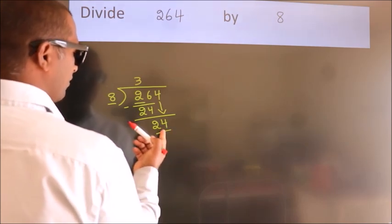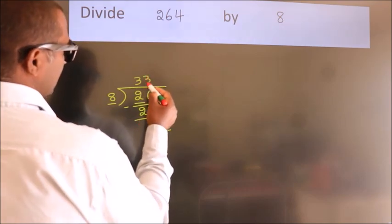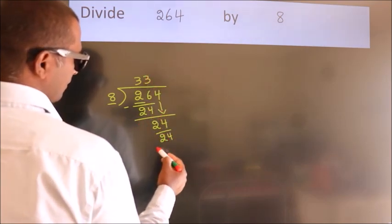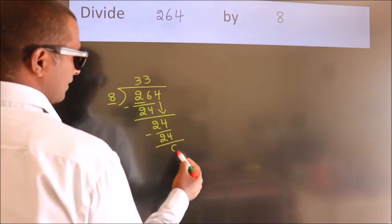When do we get 24 in the 8 table? 8 threes, 24. Now we subtract. We get 0.